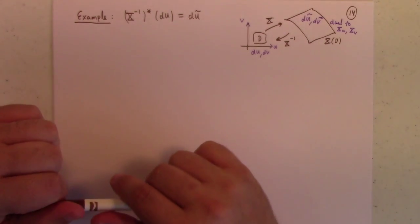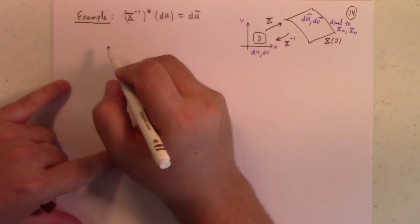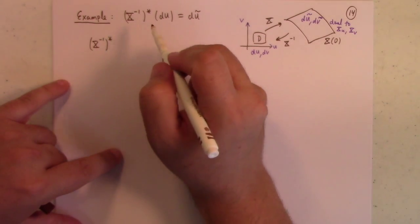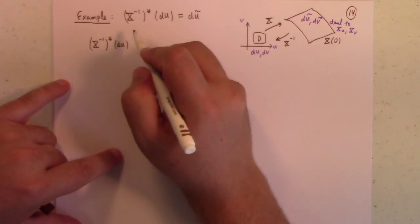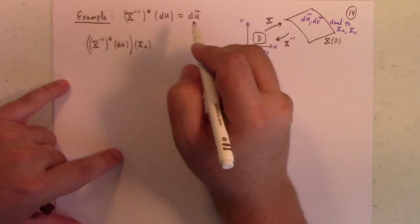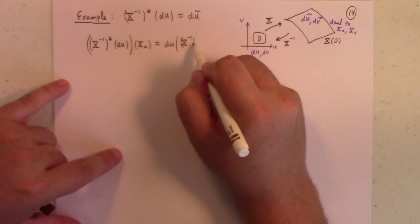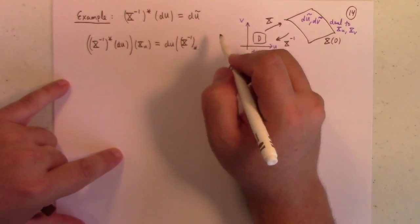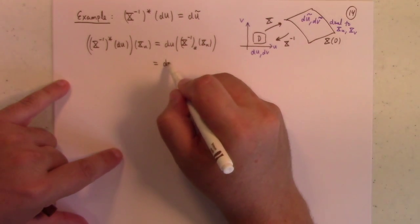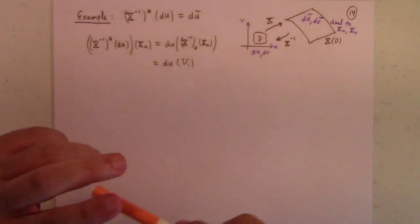And we define du tilde and dv tilde up here as being, these are dual, these were dual to the partial velocities x_u and x_v, but I claim that you can also understand them as being pullbacks of du and dv. It's of course not an accident that these are also dual to the Cartesian frame down here. So there's probably some theorem to be proved there. Getting back to my example and stopping my jibber jabber.